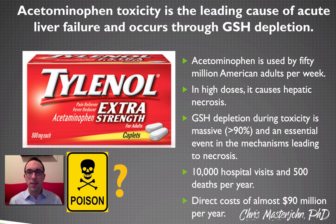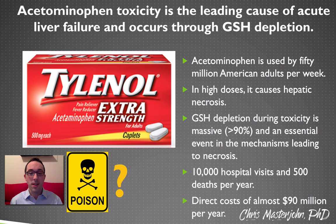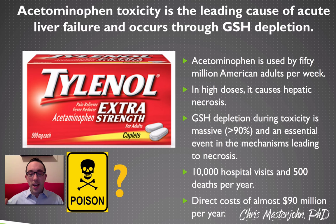Acetaminophen toxicity is very related to glutathione metabolism. It's also very important to our healthcare system because over 50 million Americans use acetaminophen every week, and for the most part that doesn't cause any problems. But in high doses it can cause hepatic necrosis, which means liver cells die a gruesome and messy death, leading to 10,000 hospital visits per year, 500 deaths, and direct costs of almost $90 million per year. Normally at a low dose, acetaminophen does not utilize glutathione conjugation. But a tiny amount generates a reactive metabolite called NAPQI that is detoxified with glutathione, and as the dose increases that NAPQI metabolite increases and the tax on the glutathione supply increases.